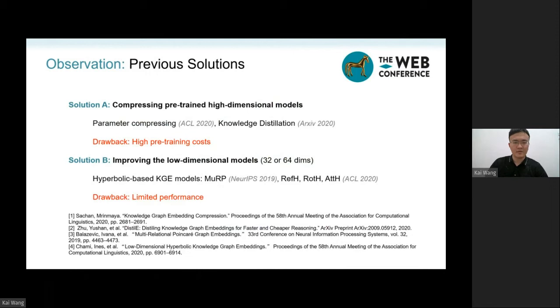One idea is using the parameter compressing or knowledge distillation to compress a pre-trained high dimensional model to a low dimensional one. But to build a pre-trained high dimensional model, the training costs cannot be avoided.